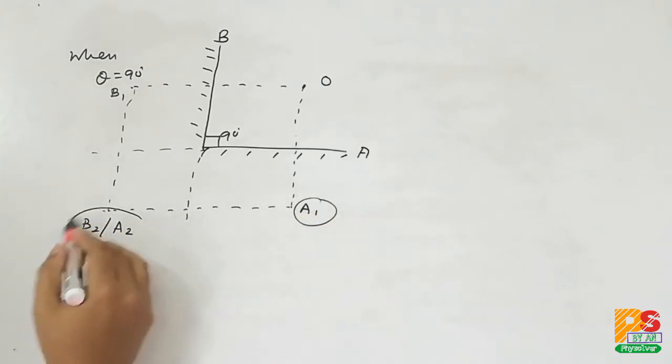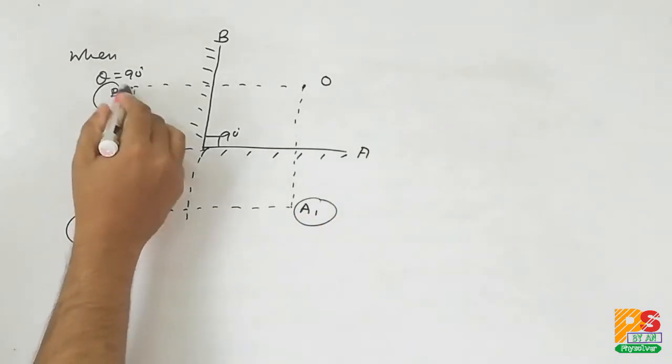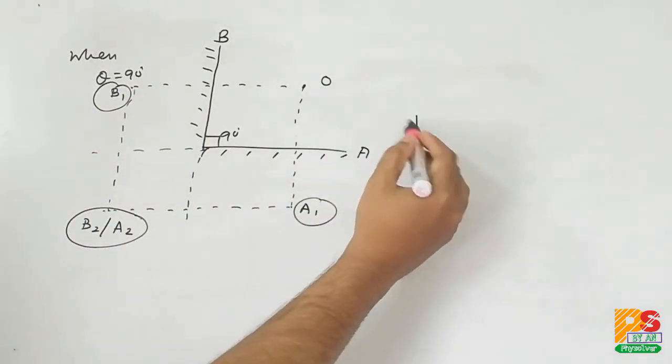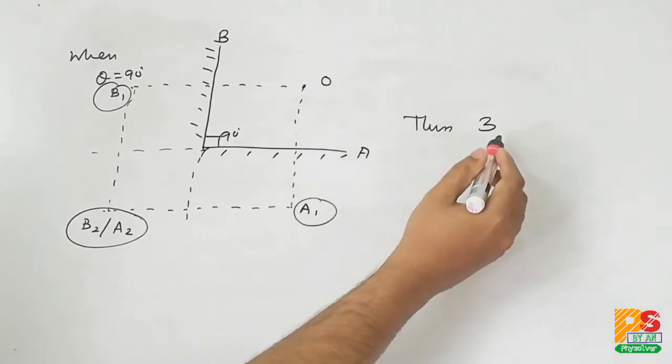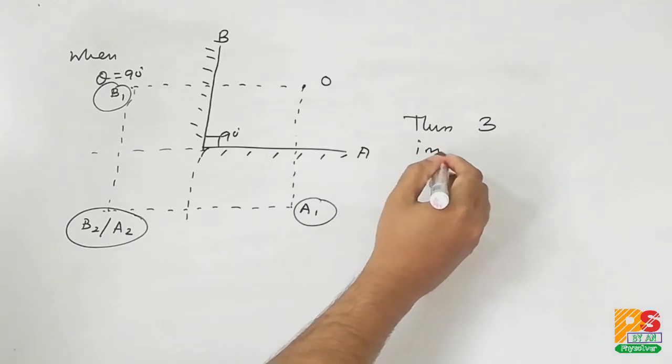For 90 degrees, B2 and A2 coincide with each other. Therefore, the total number of images of object O is 3, as you can see in the diagram.